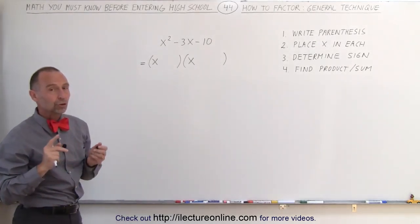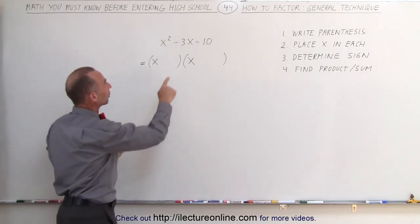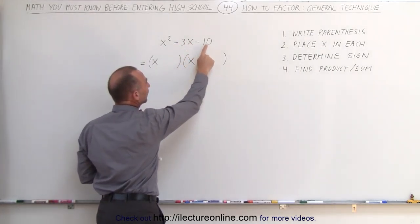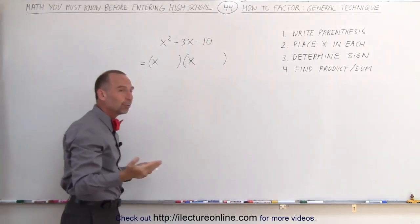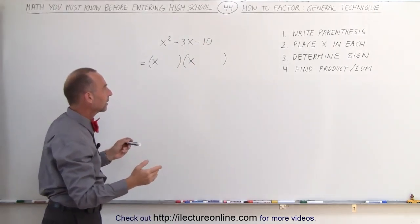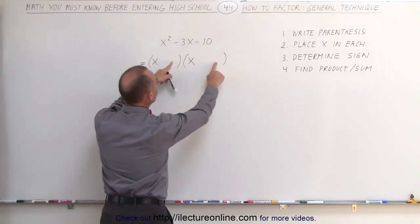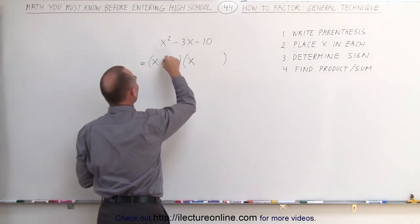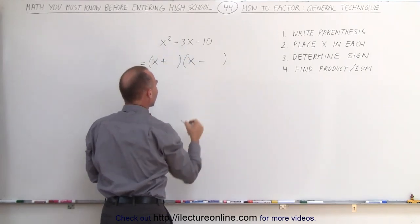The next thing you want to do is determine the sign, and that's determined by looking at these two signs right here. First of all, to get the number negative 10, you're going to have to multiply a negative number and a positive number together, which means that these must be either a positive or negative, or a negative and a positive, which means the signs are a plus and a minus.